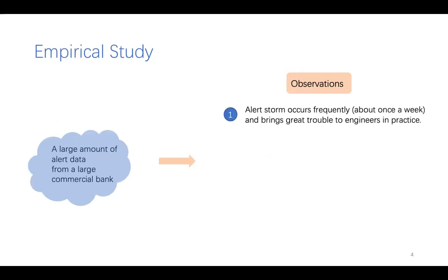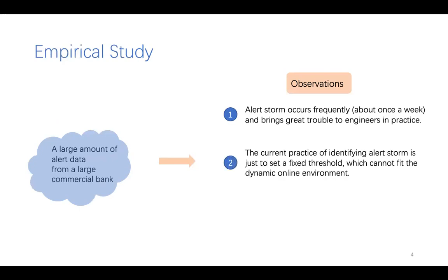First, alert storm occurs frequently about once a week and brings great trouble to engineers in practice. Second, the current practice of identifying alert storm is just to set a fixed threshold which cannot fit the dynamic online environment.